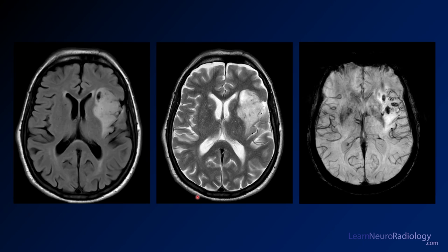Here we have some images from an MRI through the patient's brain, at the level of the lateral ventricles and insula. On the left we have FLAIR, in the middle we have T2, on the right we have what looks like susceptibility —